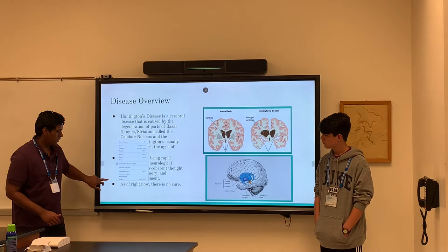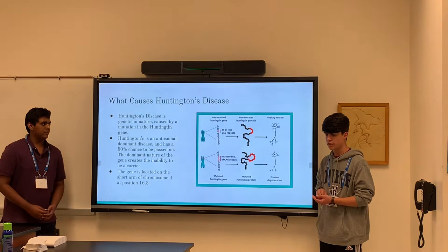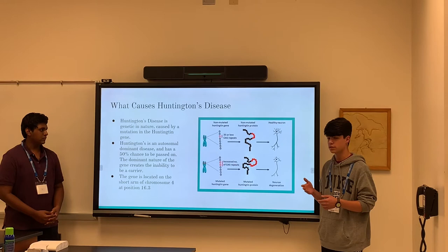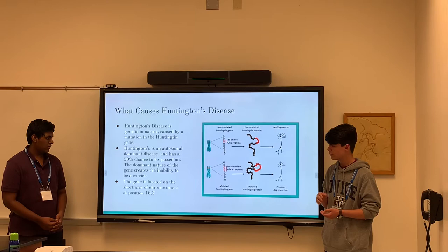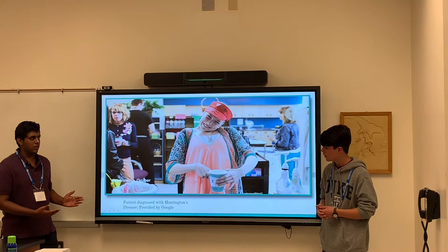Huntington's disease is an autosomal dominant trait, meaning that it affects equally both males and females as a dominant trait — meaning you have about a 50% chance of inheriting it. If your parent has had it and you receive the trait, it will show; you cannot be a carrier. It is located on the short arm of chromosome 4 at approximately position 16.3. And this is just a patient who has been diagnosed with Huntington's disease.